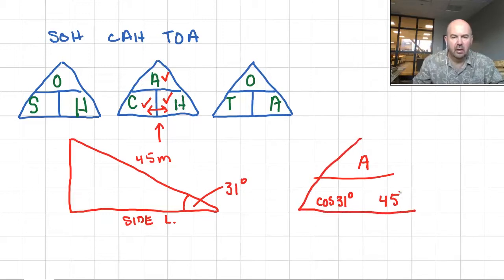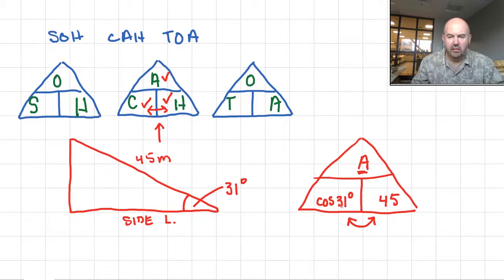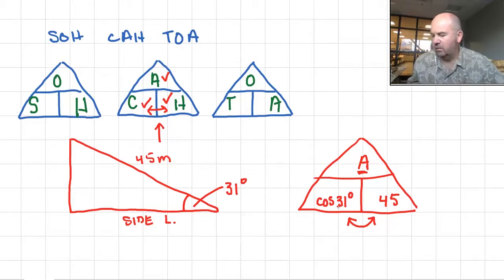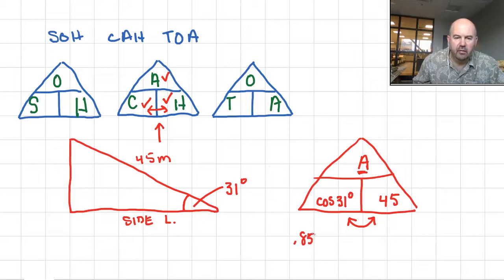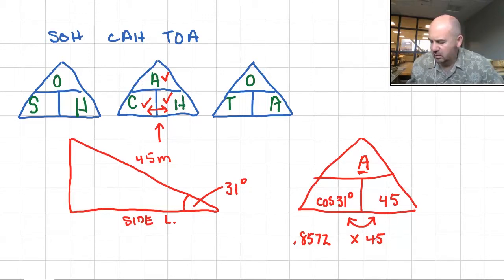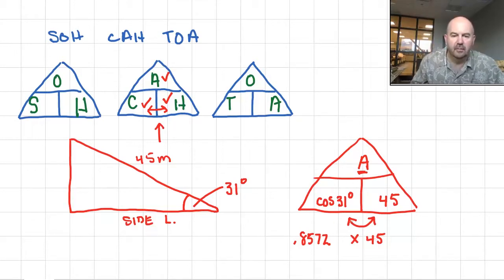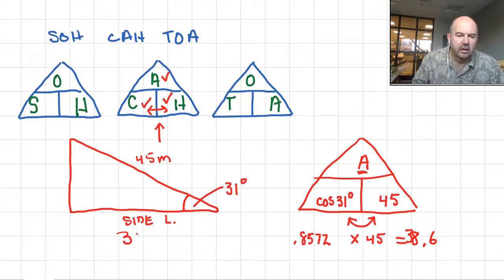Putting it into the triangle, these two numbers multiply each other to give the adjacent length. Cosine of 31 degrees equals 0.8572. Multiply by 45 and it comes up with roughly 38.6. So this side is 38.6 meters long, which makes sense if the hypotenuse is 45.